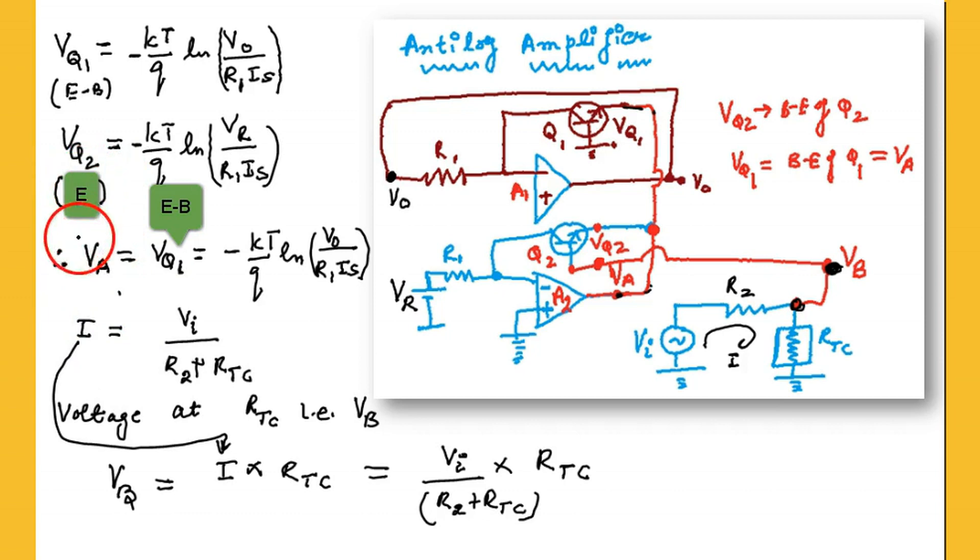So this is VQ2. Now VQ2 between the emitter and base, because the above expression is only the emitter, and VQ2, and base it is VQ2 plus VB, which is at the base, so two are added.